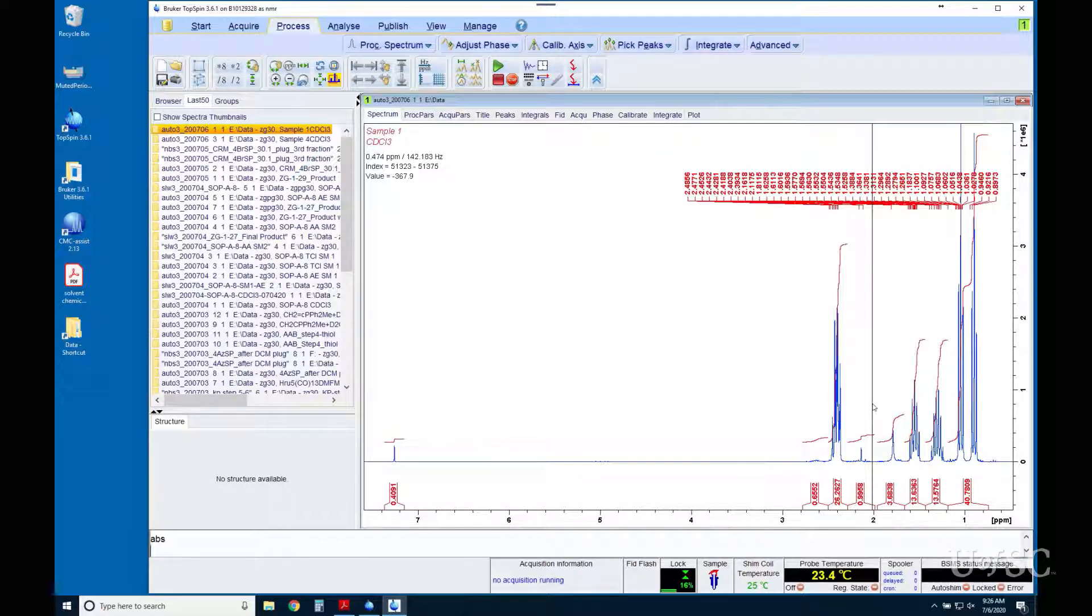The default parameters that ABS uses are pretty conservative with how far apart peaks are before it breaks them into two regions, how long the integrals are extended, and how large a peak needs to be before it is included. We are not going to go into how to adjust these parameters since it is easier to just manually define and edit integral regions.